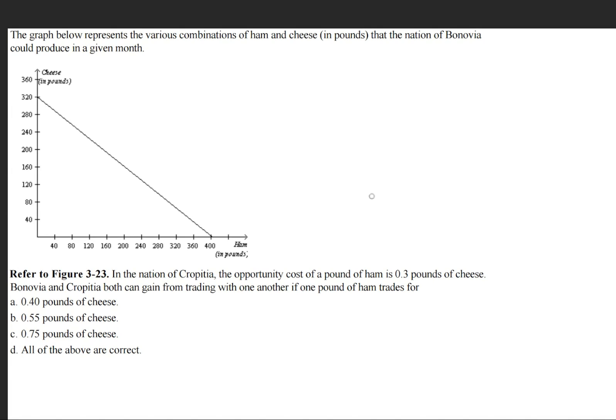The graph below represents the various combinations of ham and cheese that the nation of Bonovia could produce in a given month. In the nation of Kropotia, the opportunity cost of a pound of ham is 0.3 pounds of cheese.